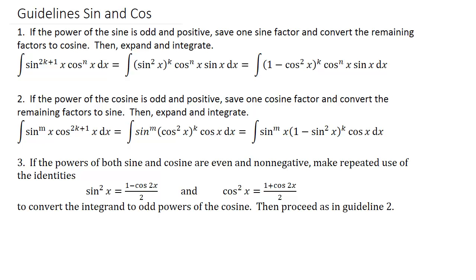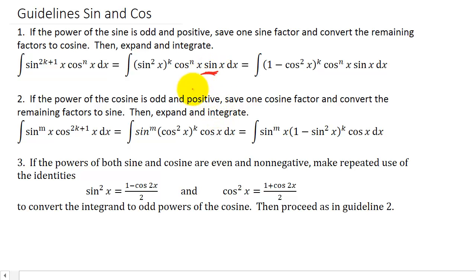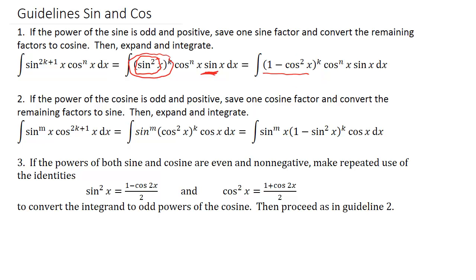Let's talk about this first guideline. With an odd power of sine, I'm going to save one factor of sine. Out of sine to the 2k+1, I'll pull out a sine x. Then this sine squared x, I'm going to convert it to 1 minus cosine squared. What this allows me to do is use u-substitution — I can let u equal cosine x.